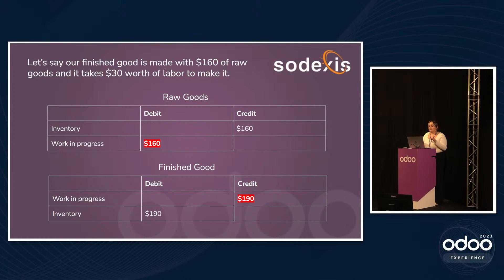What happens right now is we're not putting the cost of labor into the work in progress, so we're taking out more than what we entered — and that's what our app aims to fix.